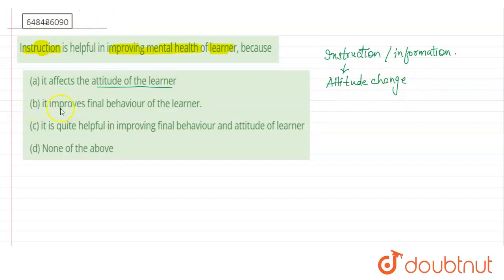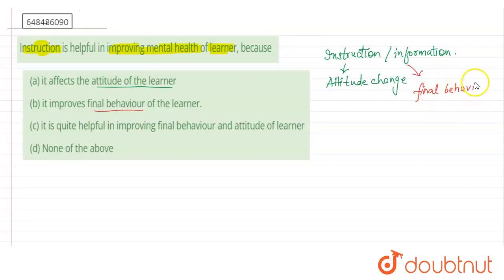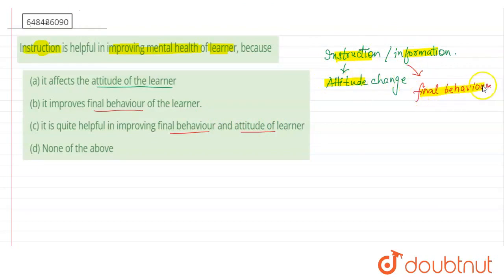If you talk about option B, that it improves the final behavior of the learner — this is right. Because if we give students information or instruction, the learner's final behavior will also get changes. If you talk about option C, that it is quite helpful in improving the final behavior as well as the attitude of the learner. So this instruction, or we can say information, is basically changing the attitude and the final behavior. So the most appropriate answer will be option C.